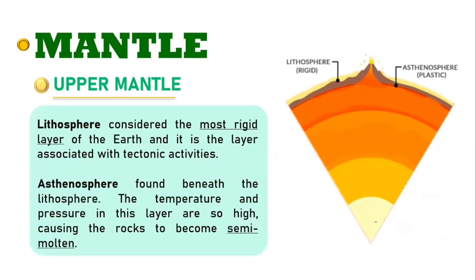The lithosphere is considered the most rigid layer of the Earth and it is the layer associated with tectonic activities. On the other hand, the asthenosphere is found beneath the lithosphere. The temperature and pressure in this layer are so high, causing the rocks to become semi-molten. But take note that the asthenosphere is not liquid, but it is more ductile, meaning it has a capacity to deform or stretch under stress.